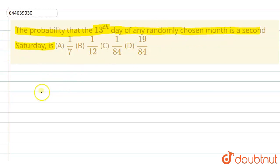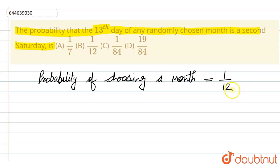First of all, we will choose a month. The probability of choosing a month is given as 1 divided by 12. Out of total 12 months, we have to select one month. So this is the probability of choosing a month.